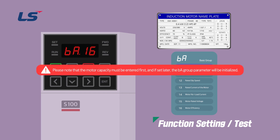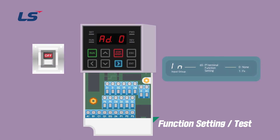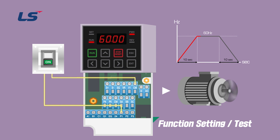As a precaution, the motor capacity must be entered first. If set later, the BA group parameter is initialized, so please be careful. To set the operation command in the terminal block, set the P1 terminal function setting, which is number 65 of input group, to 1, which is the forward operation FX. Since P1 is set as a forward contact, wire the switch to P1 and CM. If you switch ON, you can see that the target frequency goes up to 60 Hz for 10 seconds of acceleration time. When the switch is turned OFF, it can be confirmed that deceleration stops for 10 seconds, which is the deceleration time.